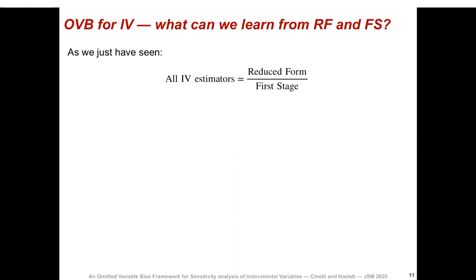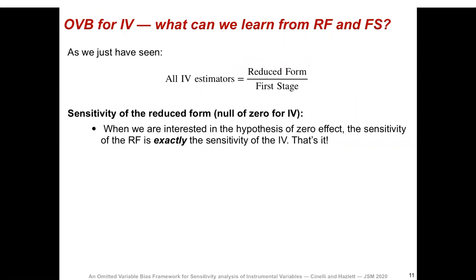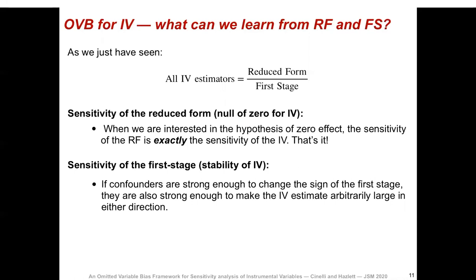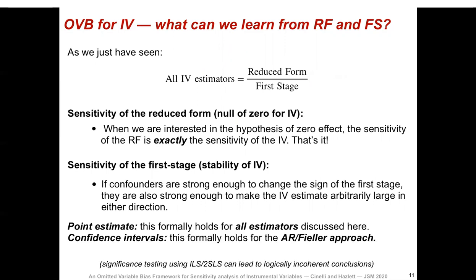All IV estimators take the form of the ratio of the reduced form and first stage. Confounders will bring the IV estimator to zero if and only if they can also bring the reduced form to zero. This leads to our first lesson: when we are interested in the hypothesis of zero effect, the sensitivity of the reduced form is exactly the sensitivity of the IV. You don't need to do anything else — you can just perform vanilla sensitivity analysis on your reduced form regression. Note also that if confounders are strong enough to change the sign of the first stage — bringing it arbitrarily close to zero — they are also strong enough to make the IV arbitrarily large.